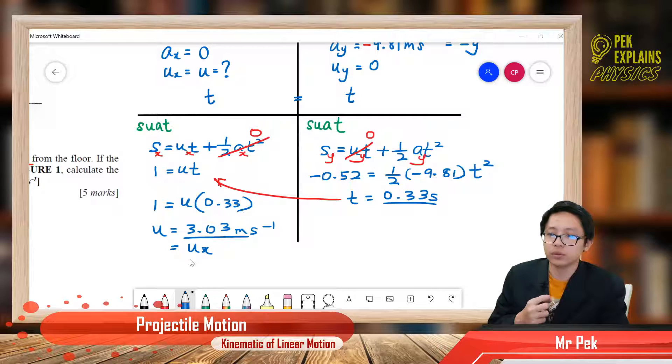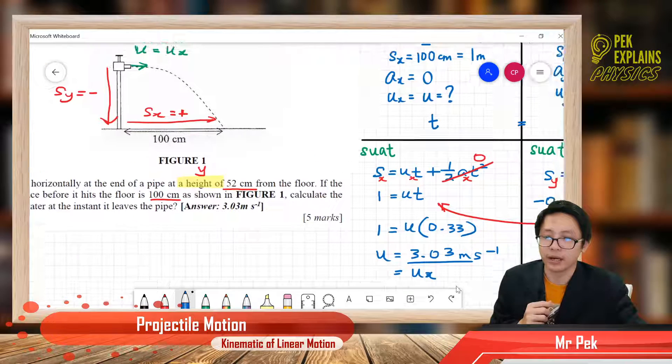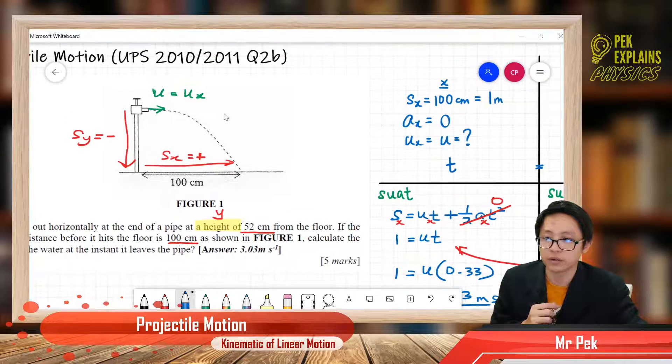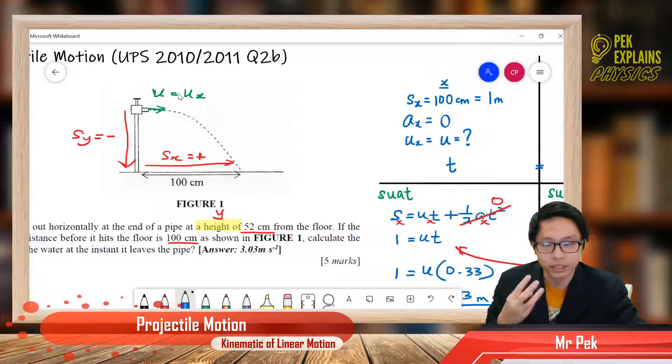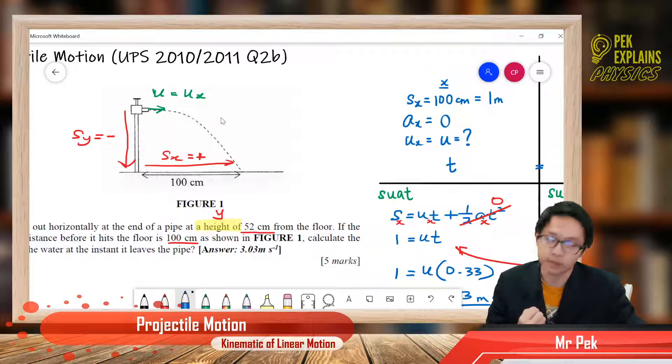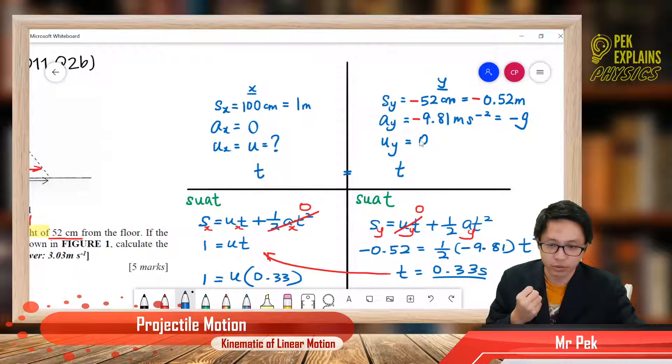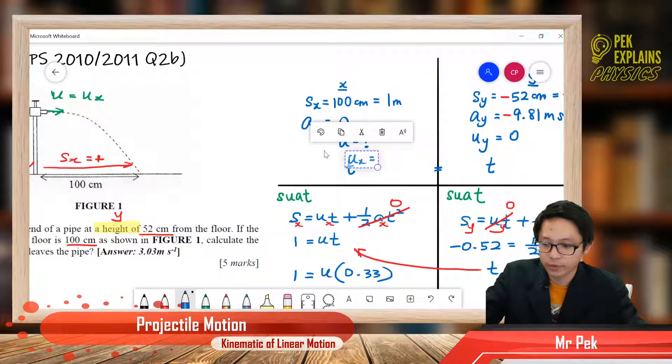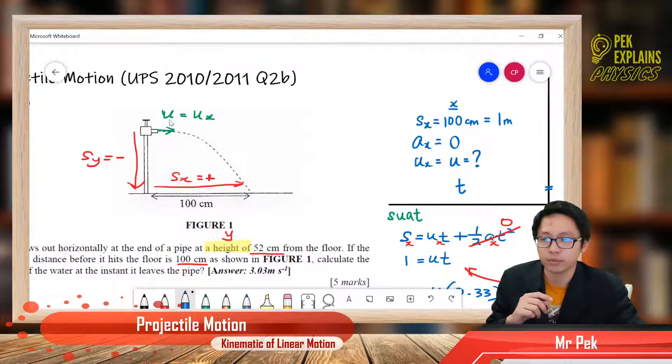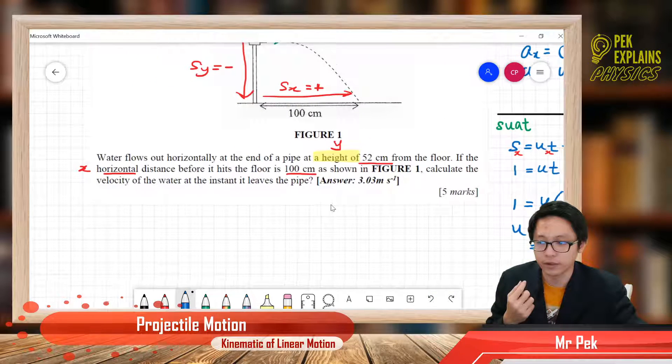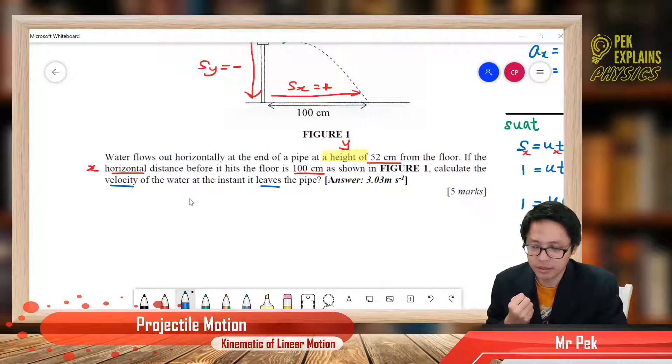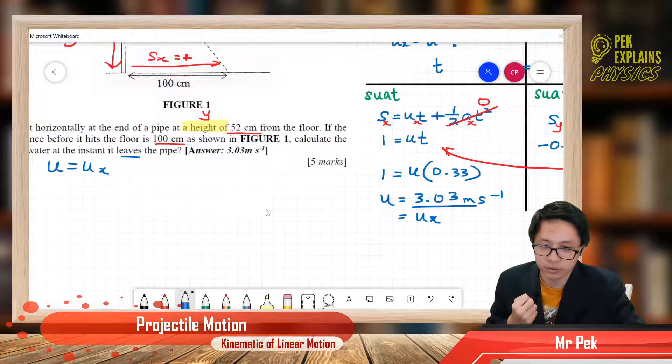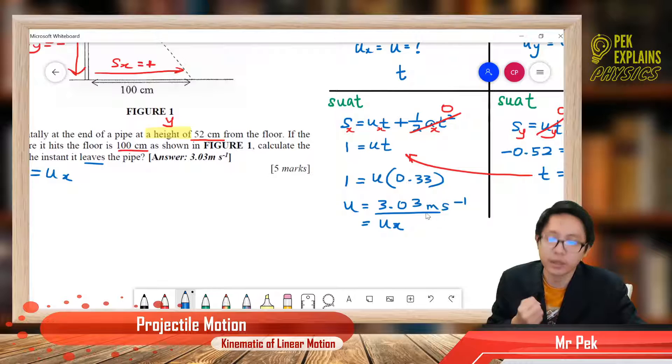It is exactly equal to ux. This is the x component velocity and also equal to the initial velocity. Remember that because the initial velocity is horizontal, the initial velocity is totally only x component velocity. Uy is 0, so ux will be equal to u. We want to find the velocity when it leaves the pipe, that means the initial velocity, which we got just now, equal to 3.03 meter per second.